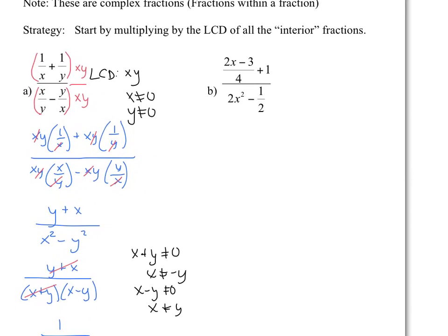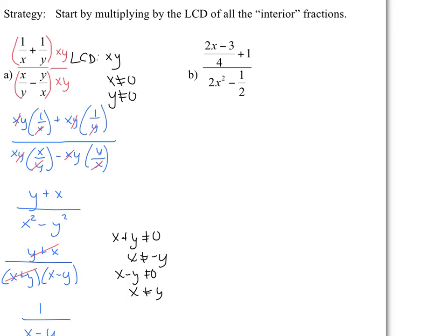The second one might be slightly easier because the fractions, there are no variables in the denominator, not just yet at least. So notice we have a fraction here and we have a fraction here. Those are the only fractions that exist in the larger fraction. All right, 4 and 2,